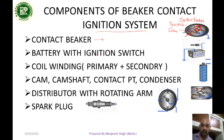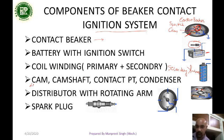Second is the battery with ignition switch — this is the ignition switch, this is the battery. Next is the coil winding — primary and secondary windings. The number of turns in the secondary winding is greater than in the primary winding. The type of cam used is the lobe type cam, and this is the camshaft, which is connected to the cam.